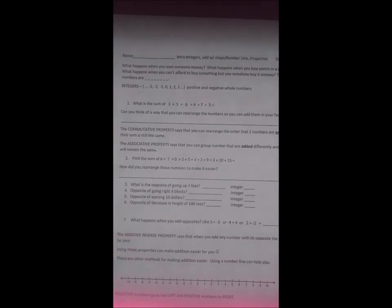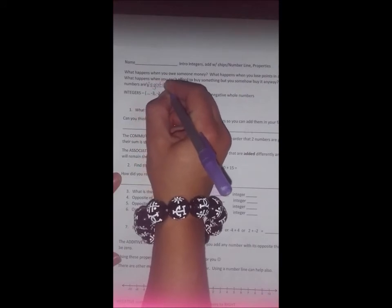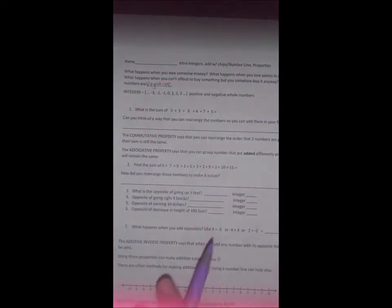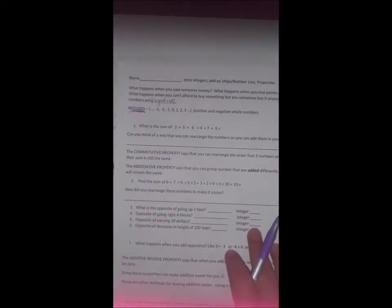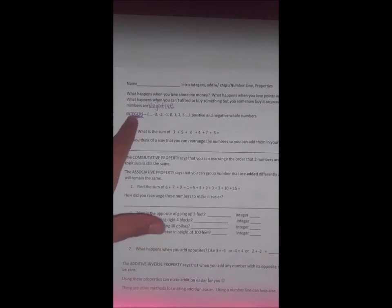On the other side we have definitions. What happens when you owe somebody money? What happens when you lose points in a game? What happens when you can't afford to buy something but you somehow buy it anyway? These numbers are what? Yep. Negative. The positive and negative whole numbers are called integers. This is a very important word. You're going to see this come up very often. When you get to high school, they're going to give you word problems and they're going to say, make sure to give me an integer answer. So that means they don't want any decimals. So you have to give a positive or negative whole number and a lot of students get hung up on that. That's why we do vocab assignments.